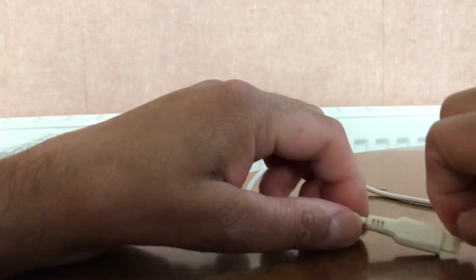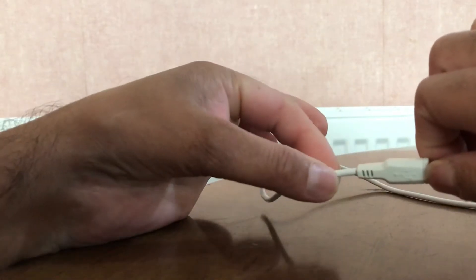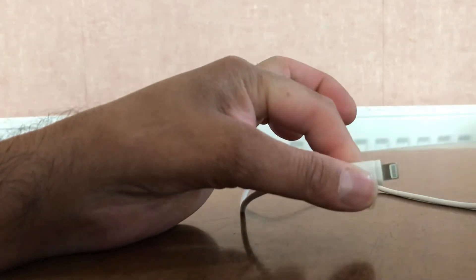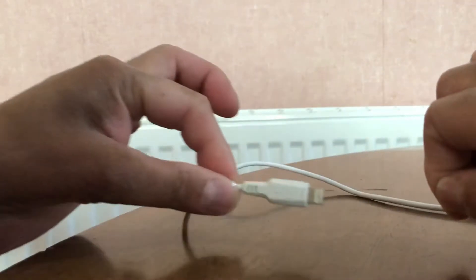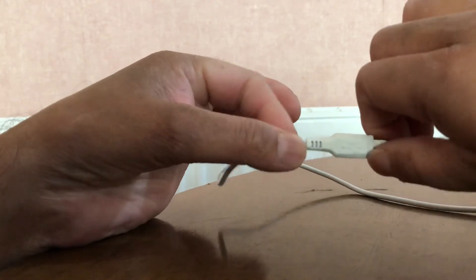So the first thing you want to do is make sure when you put your phone on charge and unplug it, do not grab the cable from here. Always grab it from here, because what tends to happen when you hold it from here and then you pull it out of your phone, it will actually weaken the connections inside here.